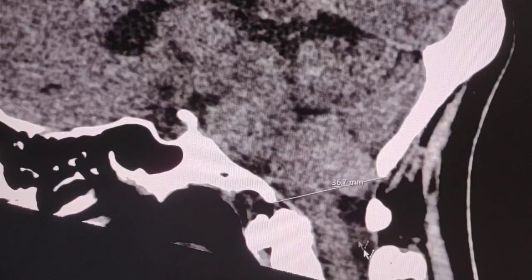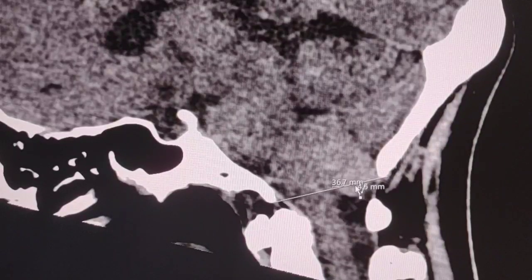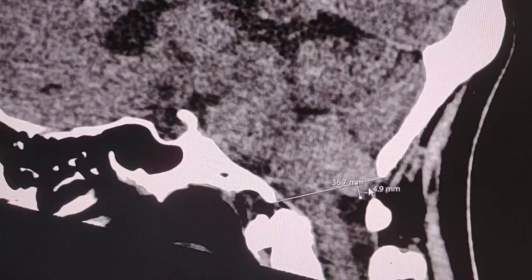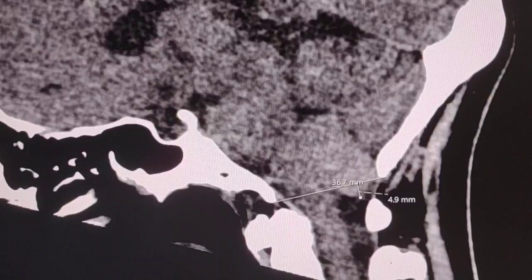Then we measure the lowest part of one of the cerebellar tonsils and here it is. It shows 4.9 mm.